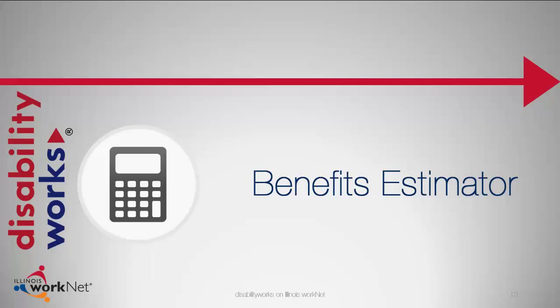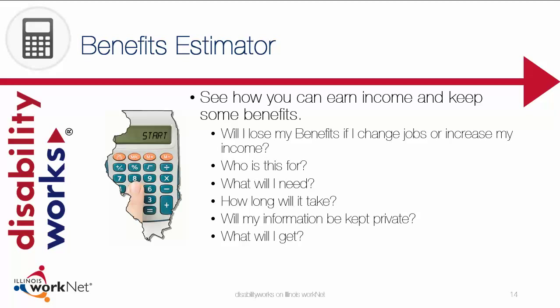The Illinois Benefits Estimator is our next topic for discussion. The Benefits Estimator helps you determine a variety of scenarios related to income and disability benefit calculations. You can learn about other benefits available to you now. This is for people currently receiving disability benefits who are between 16 and 64. For benefits eligibility, you must be a citizen or legal permanent U.S. resident and reside in Illinois. You will need bank statements, workers' compensation, or other benefit sources.